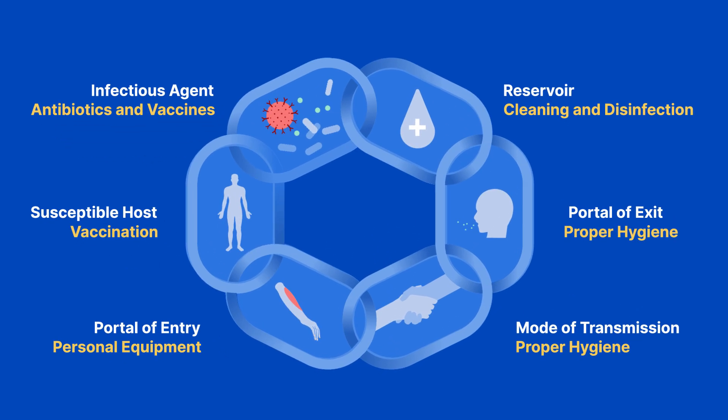In summary, the chain of infection is a vital concept in healthcare. The chain contains six links: the infectious agent, the reservoir, the portal of exit, the mode of transmission, the portal of entry, and the susceptible host. Each of these links contributes to the spread of pathogens both between individuals and throughout larger populations. It is possible to break the chain at each link through things like vaccination, cleaning and disinfection, and proper hygiene.